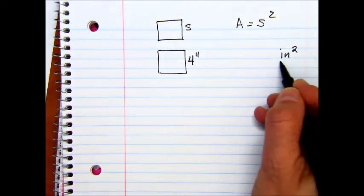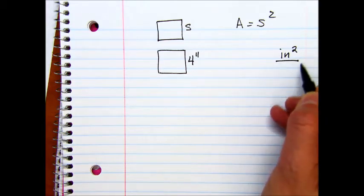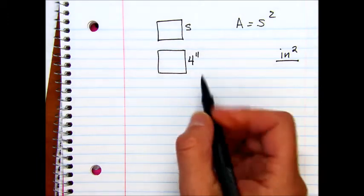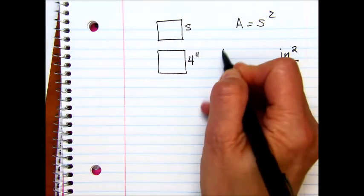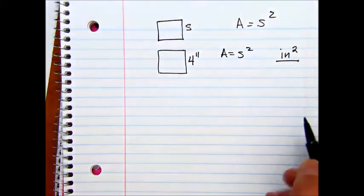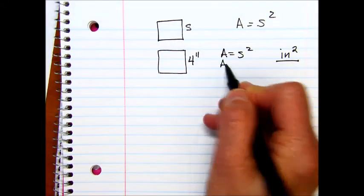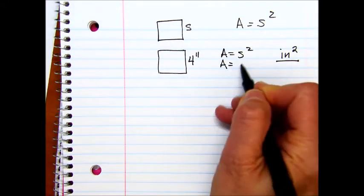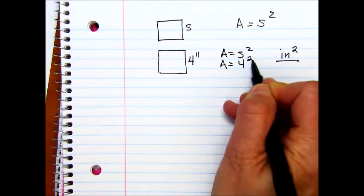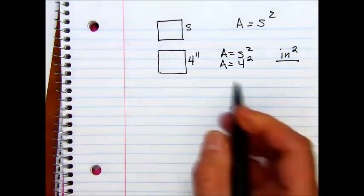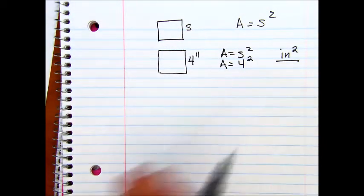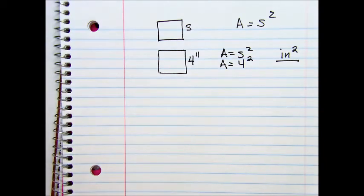And when the reader sees this, they know it's an area problem. So in this problem we have area equals side squared, and what we want to figure out is the area. We know the side is 4 and we're going to square that number. 4 squared is the same thing as 4 times 4.